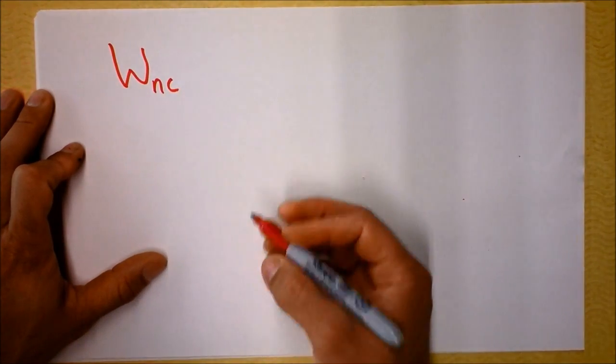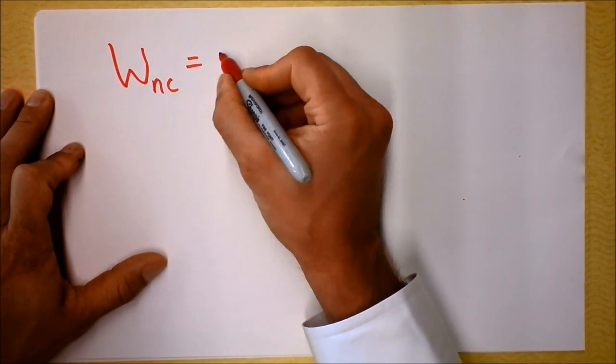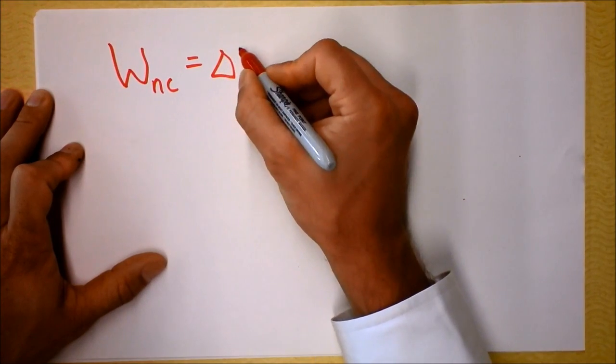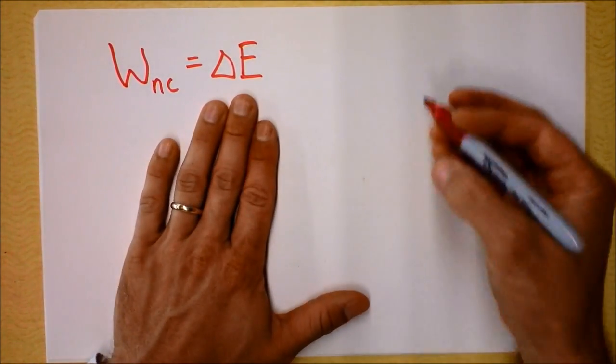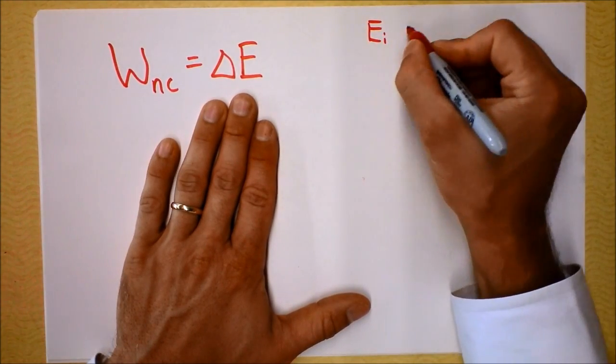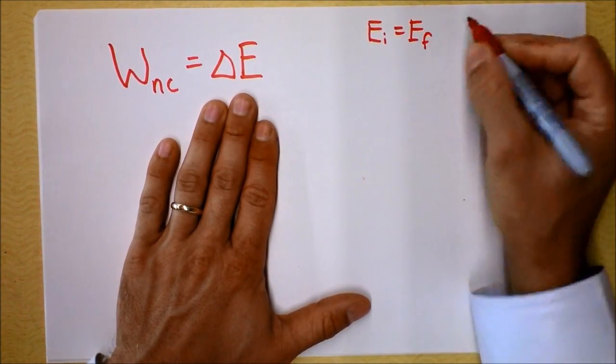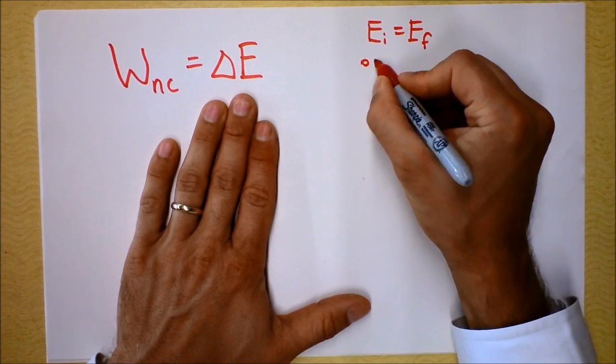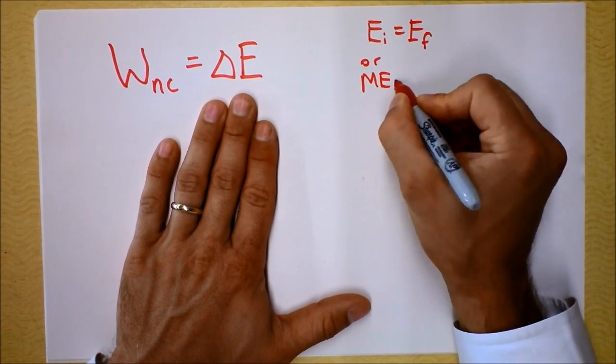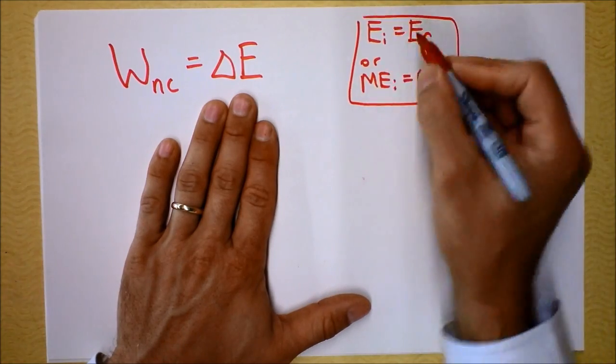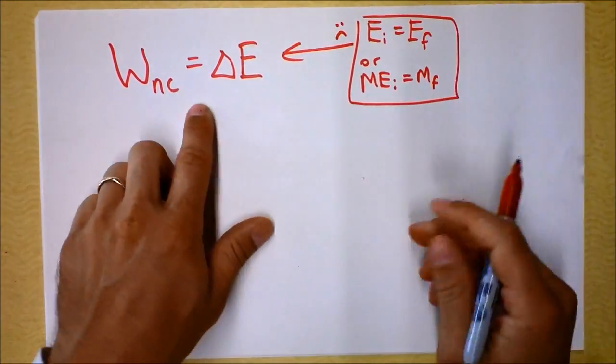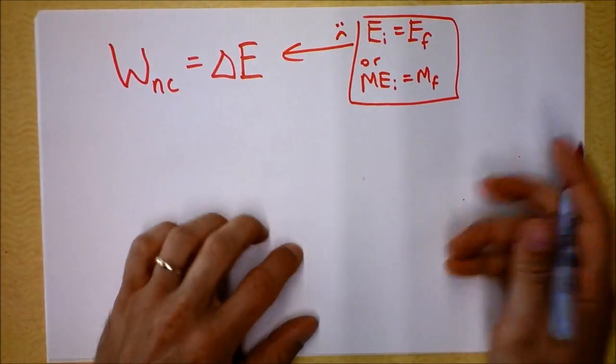The work done by non-conservative forces changes the mechanical energy of the system and therefore we can no longer use Ei equals Ef or last year, MEi equals MEf. We can't use these guys when that's the case because the energy is not constant.